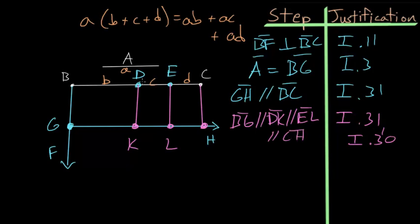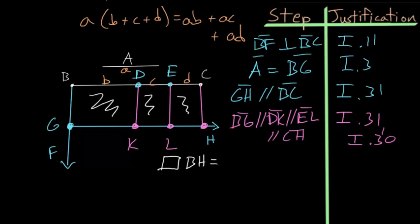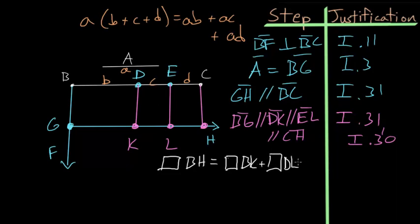Having constructed all of these parallelograms, we can now write the relationship between the big rectangle and each of the smaller ones. Namely, rectangle BH — using opposite corner points to name it — equals the sum of the three smaller rectangles: rectangle BK, plus rectangle DL (the middle one), plus rectangle EH.